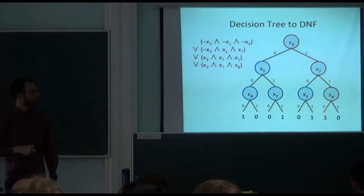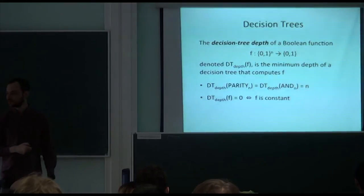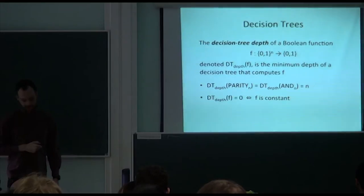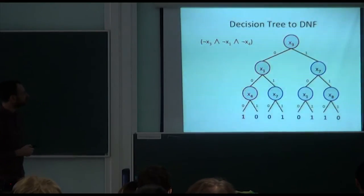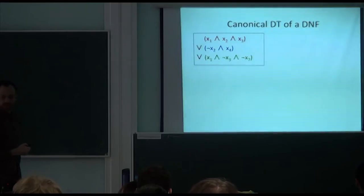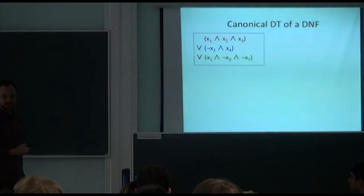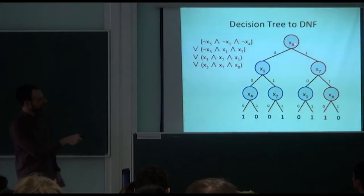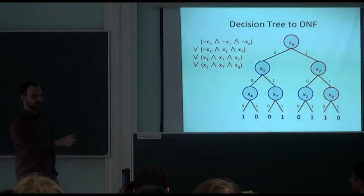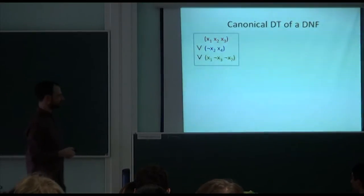Question: dt-depth is the minimum depth over all possible decision trees? Exactly. Then why is parity not log n? Because the queries are variables. So the AC0 depth of parity would be like log n, but the decision tree depth is n since queries are individual bits.